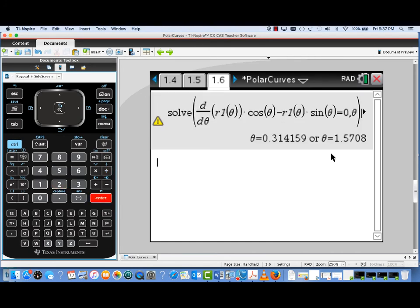Let's enter that and see what kind of solution we get. Now we get actually a couple of solutions. One of them looks like, well, actually looks like pi divided by 10.